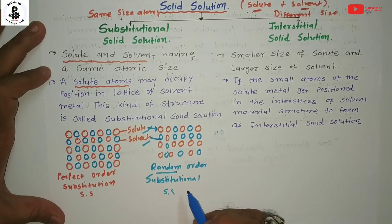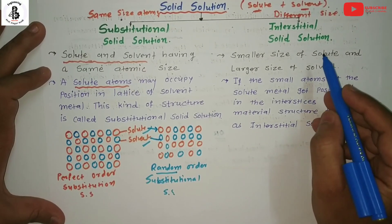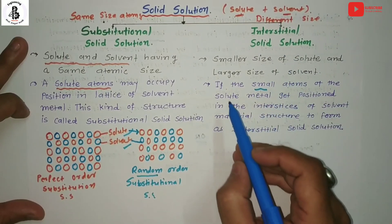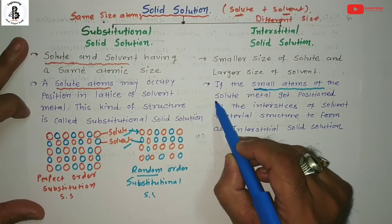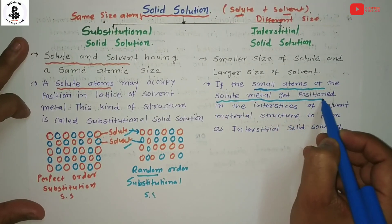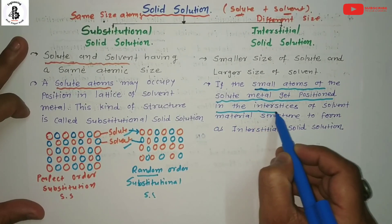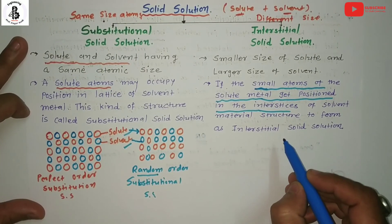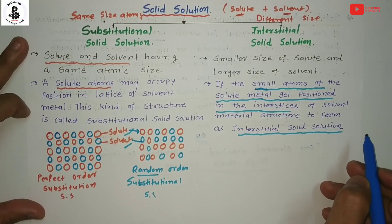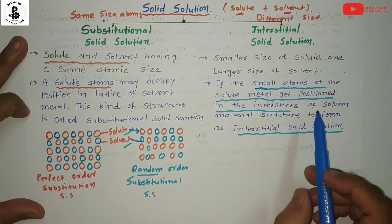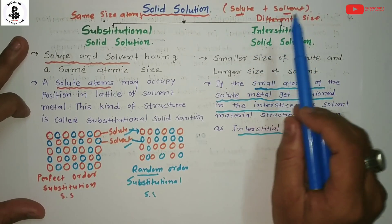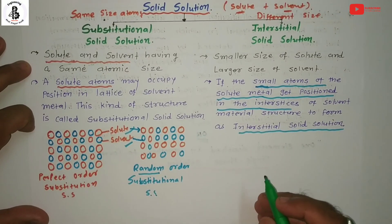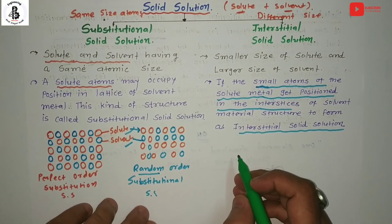Now talking about interstitial solid solutions: in this case, small atoms of the solute get positioned — that is, they occupy the interstitial spaces — within the solvent material structure to form a new material. This is called an interstitial solid solution. When the solute and solvent have different sizes, it always forms an interstitial solid solution.